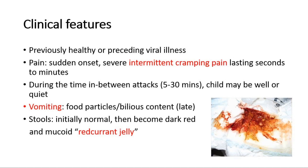The child is usually previously healthy, or they might have had a preceding viral illness a few days ago. They often have abdominal pain which is sudden in onset, very severe, and intermittent cramping pain. Every time they have the pain, it lasts for around a few seconds to a few minutes, and it is intermittent — it comes, goes, and then comes again.